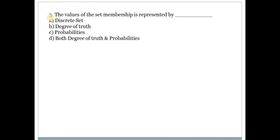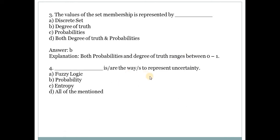Third question: The values of the set membership is represented by answer B, that is degree of truth. In fuzzy, both probabilities and degree of truth range between 0 to 1. Fourth question: What is the way to represent uncertainty? Answer is D, that is fuzzy logic, probability and entropy. All these three represent data.